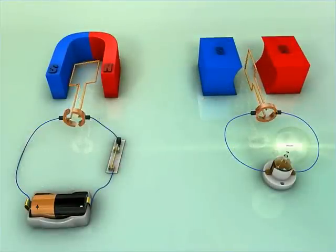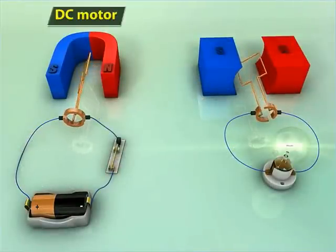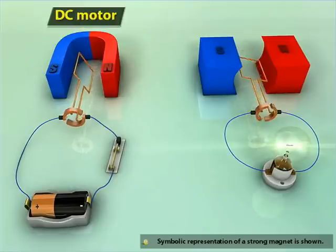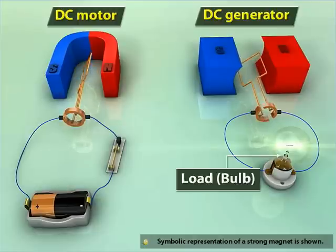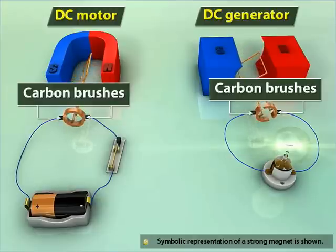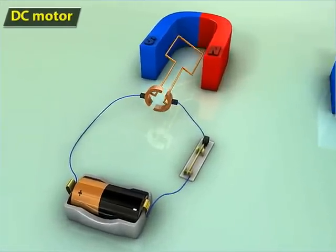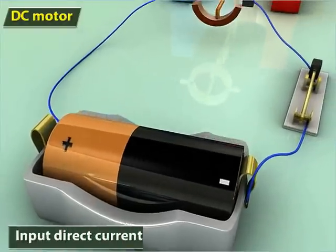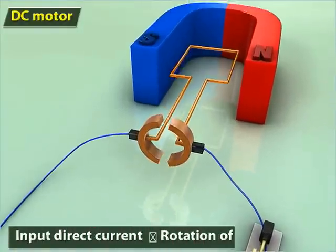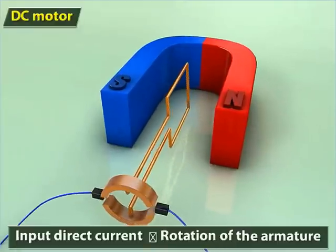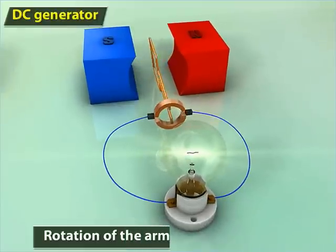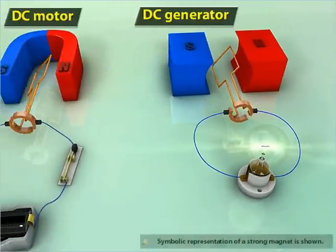Let us compare the construction and working of a DC motor to that of a DC generator. A DC motor has an input voltage supply, whereas a DC generator has a load like a bulb connected to the carbon brushes. In the case of a DC motor, an input direct current causes the rotation of the armature, whereas in the case of a DC generator, the rotation of the armature results in a DC voltage across the load.